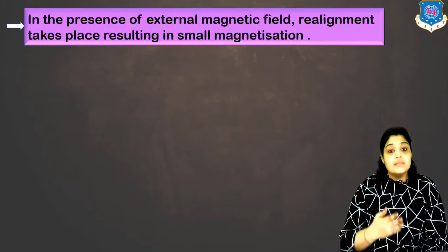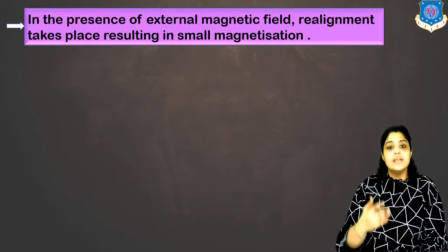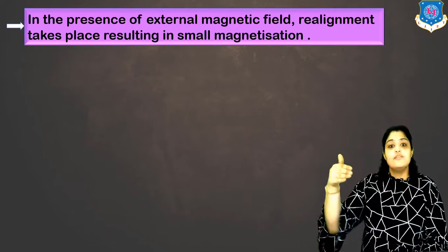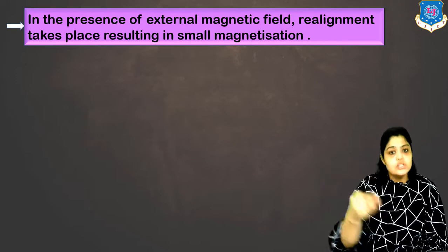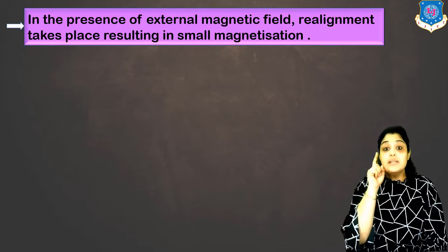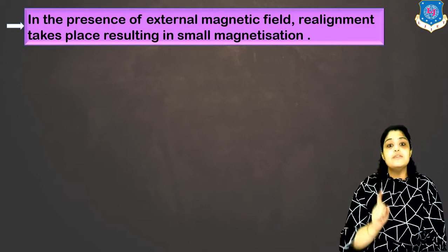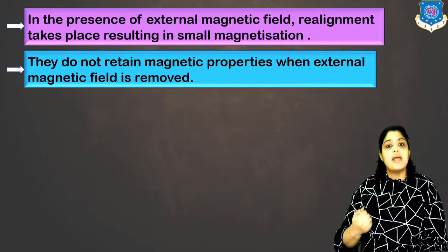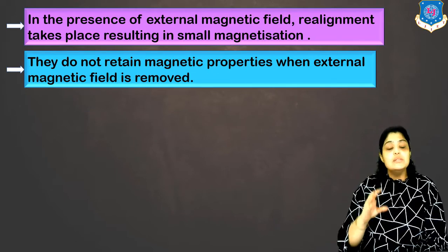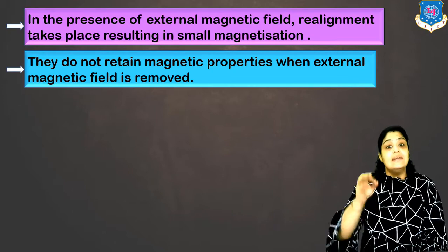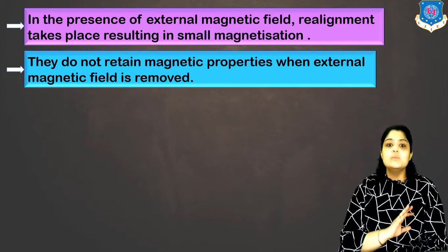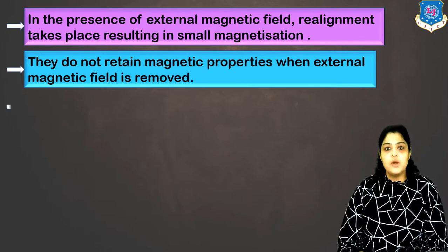In the presence of an external magnetic field, the realignment will always take place in the direction of the applied magnetic field. So if you are applying magnetic field in one direction, the dipoles will also align in that direction. But this continues only while the external magnetic field is present. They do not retain magnetic properties when the magnetic field is removed — the moment you remove the magnetic field, the dipoles will again be randomly oriented.